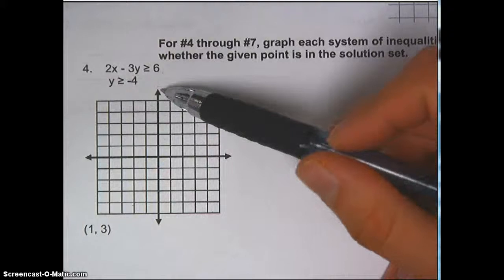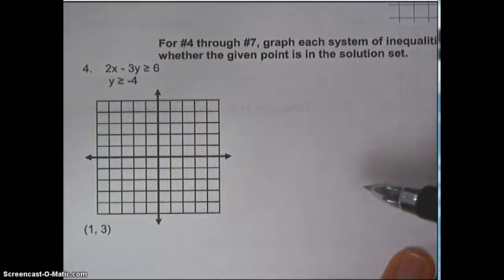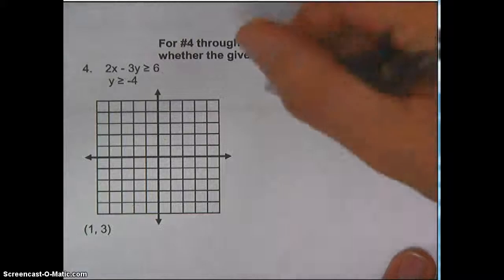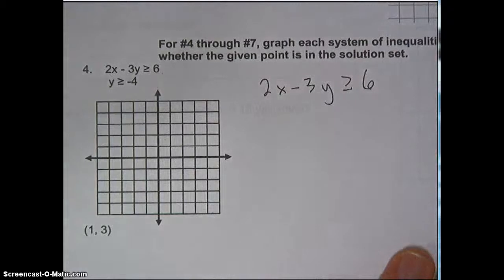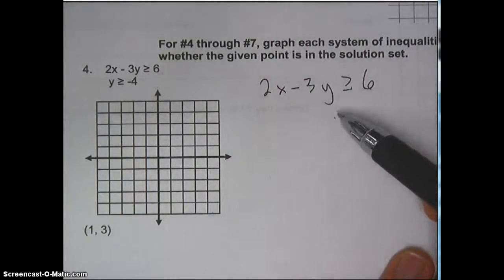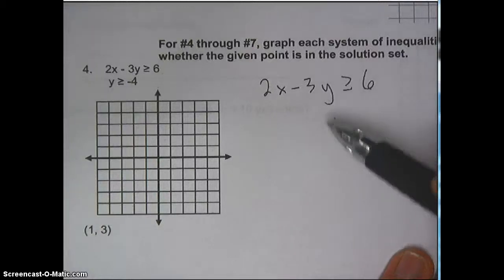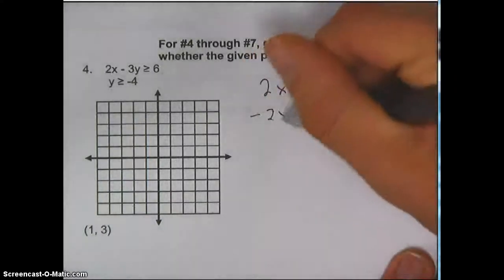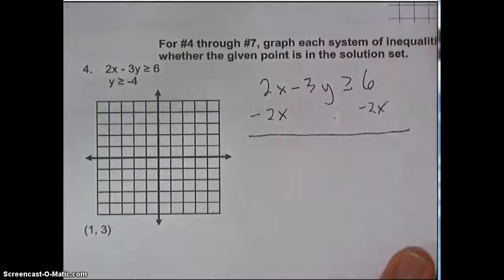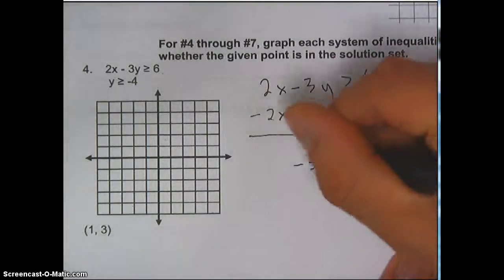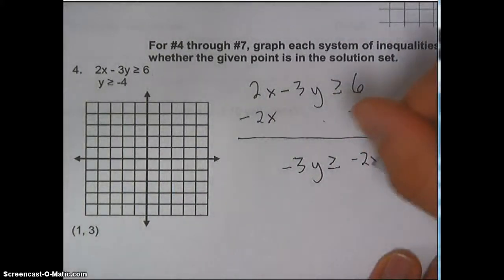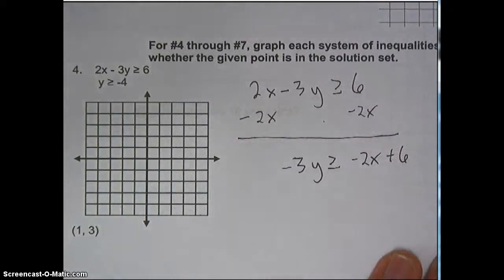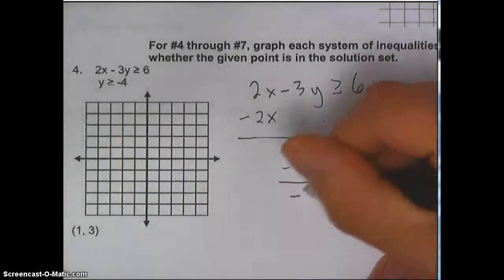I've got two equations now, and I'm supposed to graph them and shade the appropriate area. Looking at 2x minus 3y is greater than or equal to 6 — this is not in slope-intercept form, which makes it a little harder to graph. So I want to put it in slope-intercept form. First thing: subtract 2x from both sides, leaving negative 3y is greater than or equal to negative 2x plus 6. Then divide everything by negative 3.